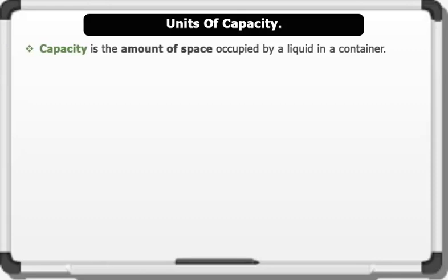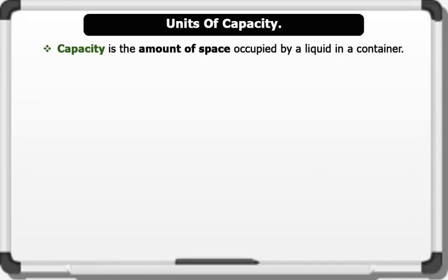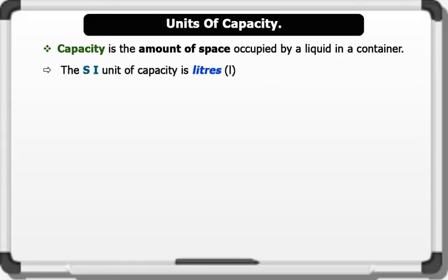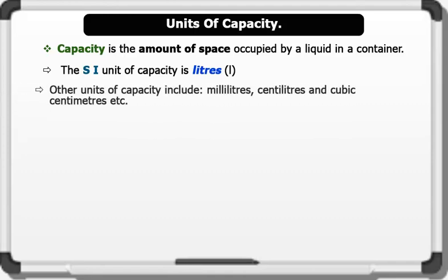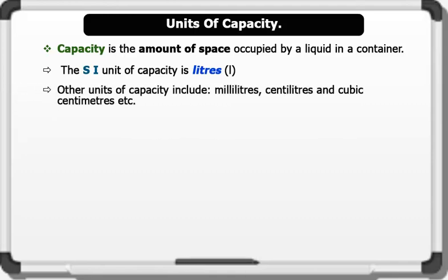Units of Capacity. Capacity is the amount of space occupied by a liquid in a container. The SI unit of capacity is liters. Other derivations of the units of capacity include milliliters, centiliters, and cubic centimeters, etc. Now let's see how they are derived.